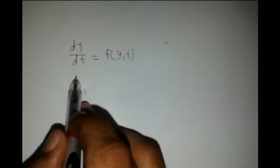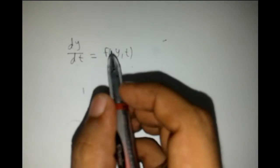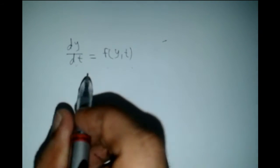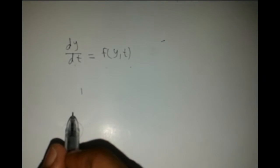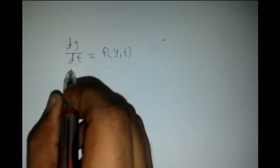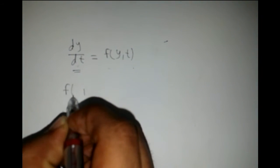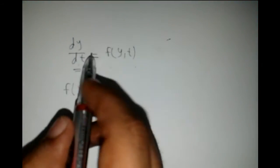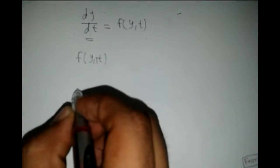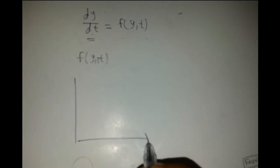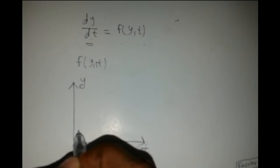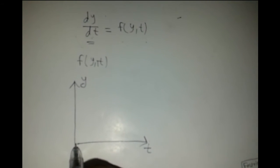The differential equation dy/dt equals a function of y of t. To find the solution, we consider dy/dt as a function of y and t — this is nothing but the slope. We have a solution on the t-y plane, where y is the dependent variable on the y-axis and t is the independent variable on the x-axis.